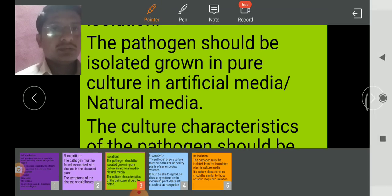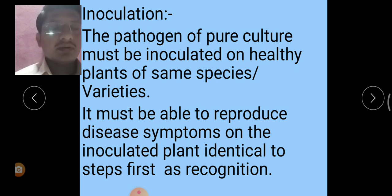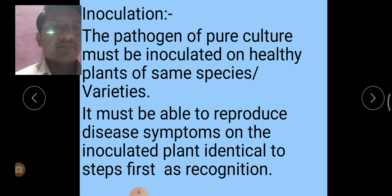Next, Inoculation. The pathogen of pure culture must be inoculated on healthy plants of the same species and same varieties. It must be able to reproduce disease symptoms on the inoculated plant, identical to the first step of recognition.